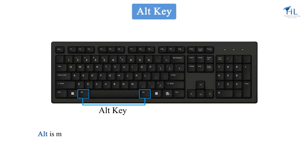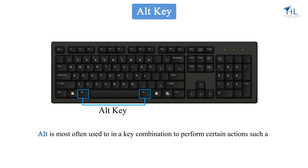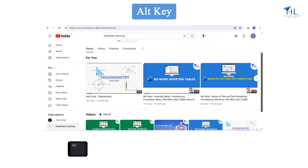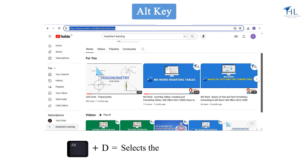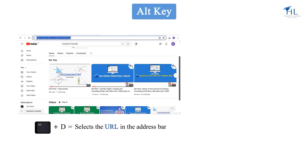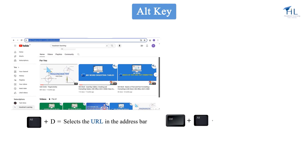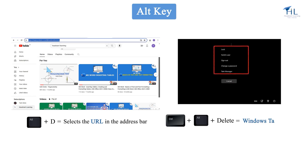Alt is most often used in a key combination to perform certain actions such as accessing the options in the file menu or ribbon. For example, Alt+D selects the URL in the address bar in internet browsers. And Ctrl+Alt+Del opens the Windows Task Manager.